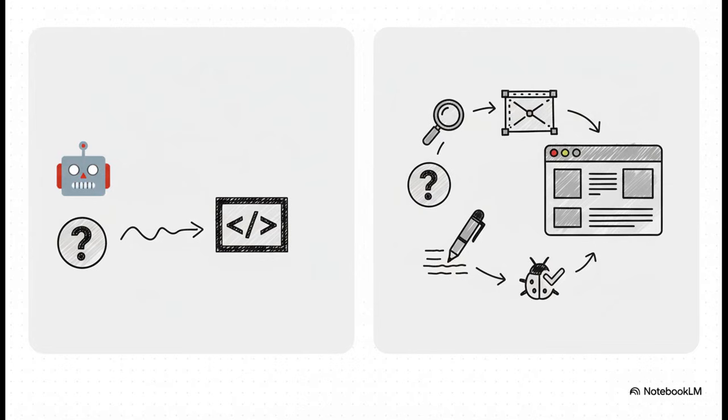This comparison really makes it clear. On the left, you've got your typical AI—you ask for a website, it gives you a chunk of code. Helpful? Maybe. But that's it. Now look at the right: you give a Gemini agent the same request, and it researches your competitors, designs a layout, writes all the marketing copy, codes the entire webpage, and even tests for bugs before handing you the finished site. That is a massive leap forward.